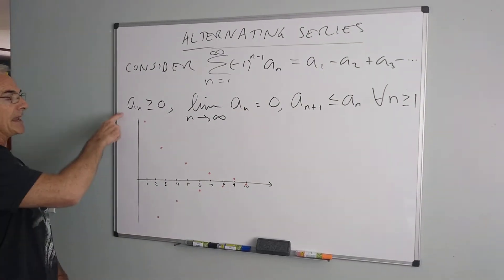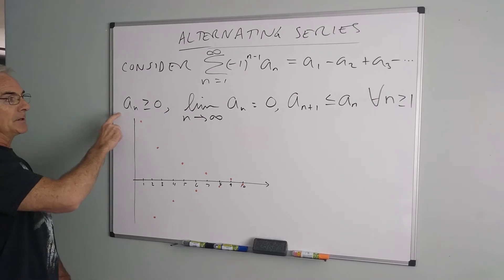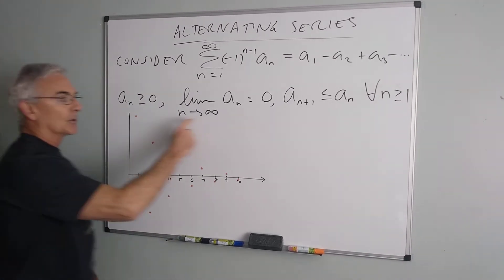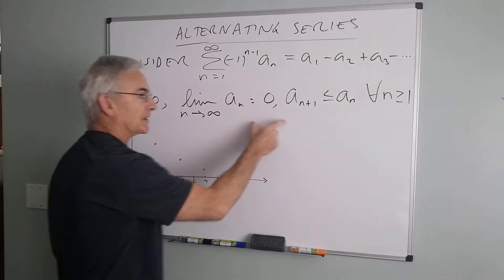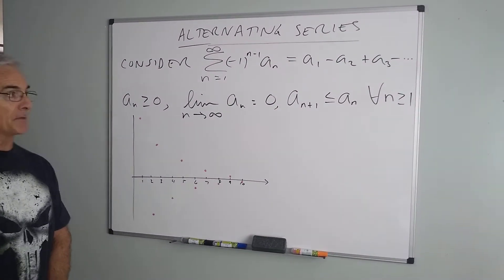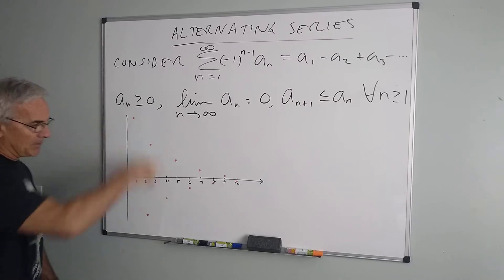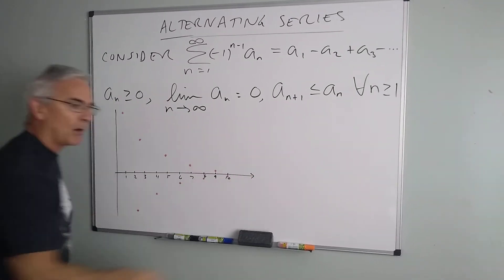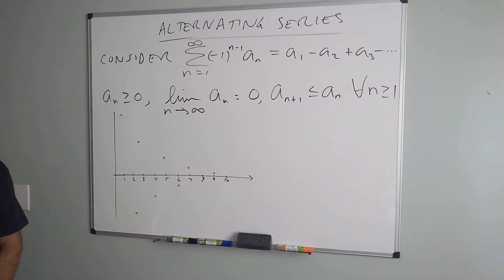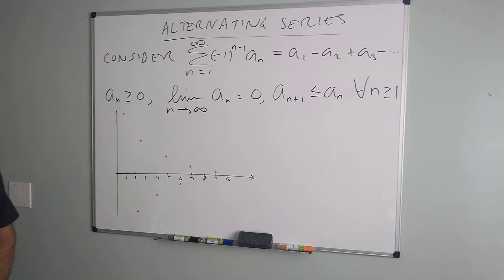If we assume that the a's themselves are non-negative, the limit is approaching zero, and the terms are actually getting smaller, these last two basically are the nth term test, then we can have a situation where I am alternating in sign but getting smaller. We may actually get convergence when the non-alternating didn't converge.